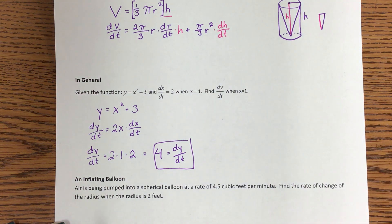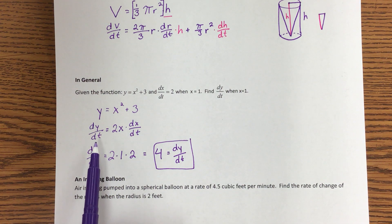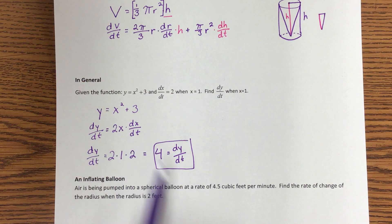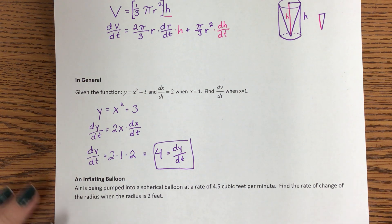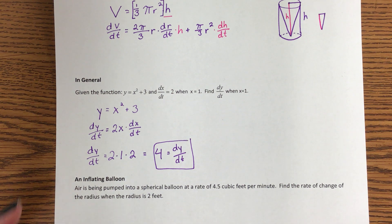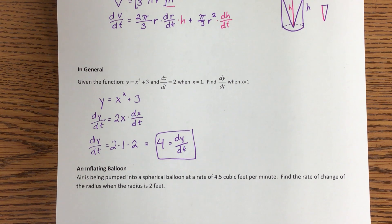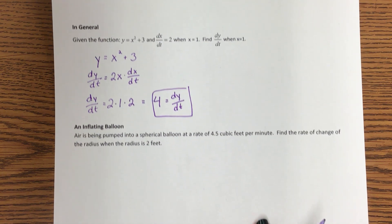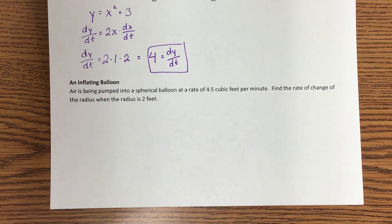You cannot just put y prime on problems that are with respect to time or any other variable. Normally y prime means dy/dx. So any time it's with respect to time, you need to put the dt's on there.